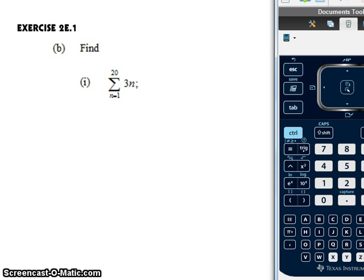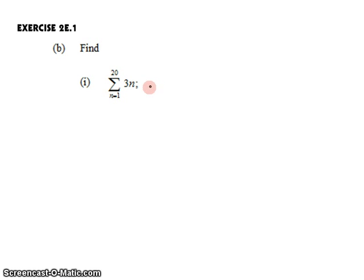So on our page we can write the sum from 1 to 20 of 3n is 630.